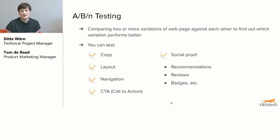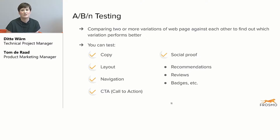And then lastly, social proof. This can include recommendations, customer reviews on your page, or badges like discount badges or something like 'popular right now' for a product — something that gains people's interest. This can also make a huge difference in conversions, for example.